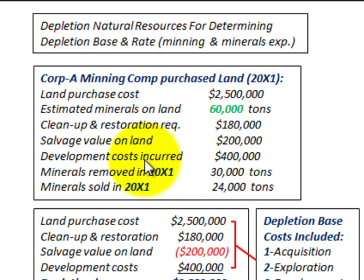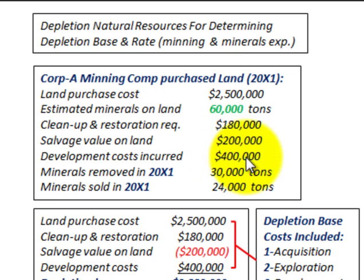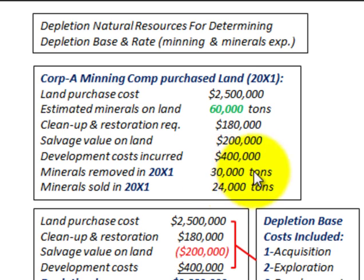There were development costs incurred prior to mining the land of $400,000. The minerals removed in 20X1 were 30,000 tons, and the minerals sold in 20X1 were 24,000 tons.